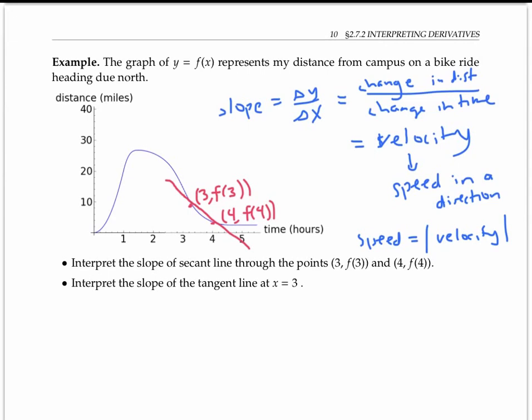So in our case, the velocity here must be negative because our distance is decreasing. And we could estimate it very roughly as about, say, four minus 12 over four minus three, so about negative eight miles per hour.